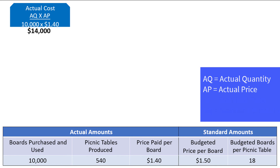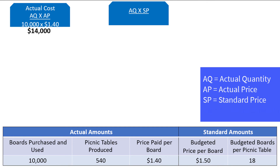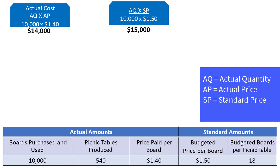The next thing we want to calculate is the actual quantity (AQ) times the standard price (SP). The actual quantity of materials purchased is still 10,000 boards, but now we are multiplying by the standard price of $1.50 per board, which gives us $15,000. Notice that both values use the actual quantity, but one multiplies by the actual price and one multiplies by the standard price. In other words, we have held quantity constant and allowed only price to vary. When we let only price vary, we get the price variance when we subtract these two values.